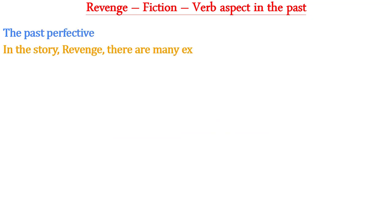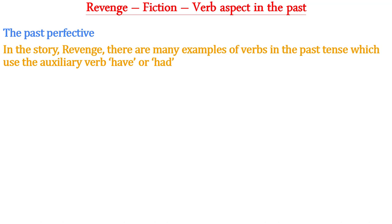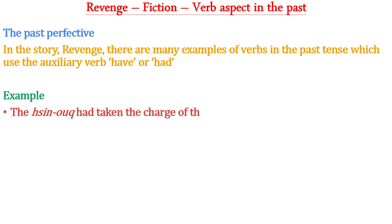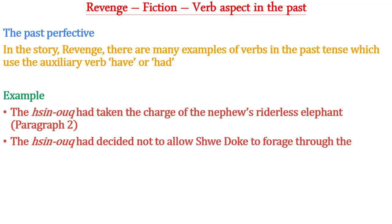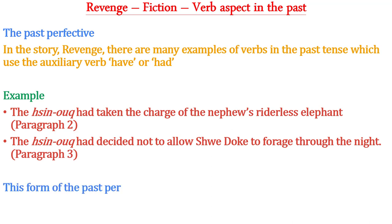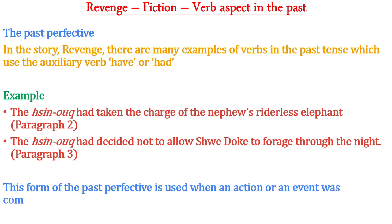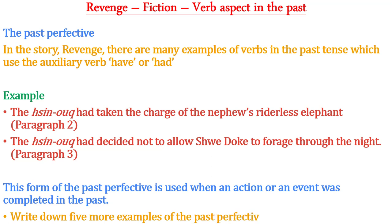The past perfective in the story 'Revenge': there are many examples of verbs in the past tense which use the auxiliary verb 'have' or 'had'. For example: 'The Shinok had taken charge of the nephew's riderless elephant' (paragraph two), and 'The Shin Hawk had decided not to allow Shuidok to forage through the night' (paragraph three). This form of the past perfective is used when an action or event was completed in the past. Write down five more examples of the past perfective from the text.